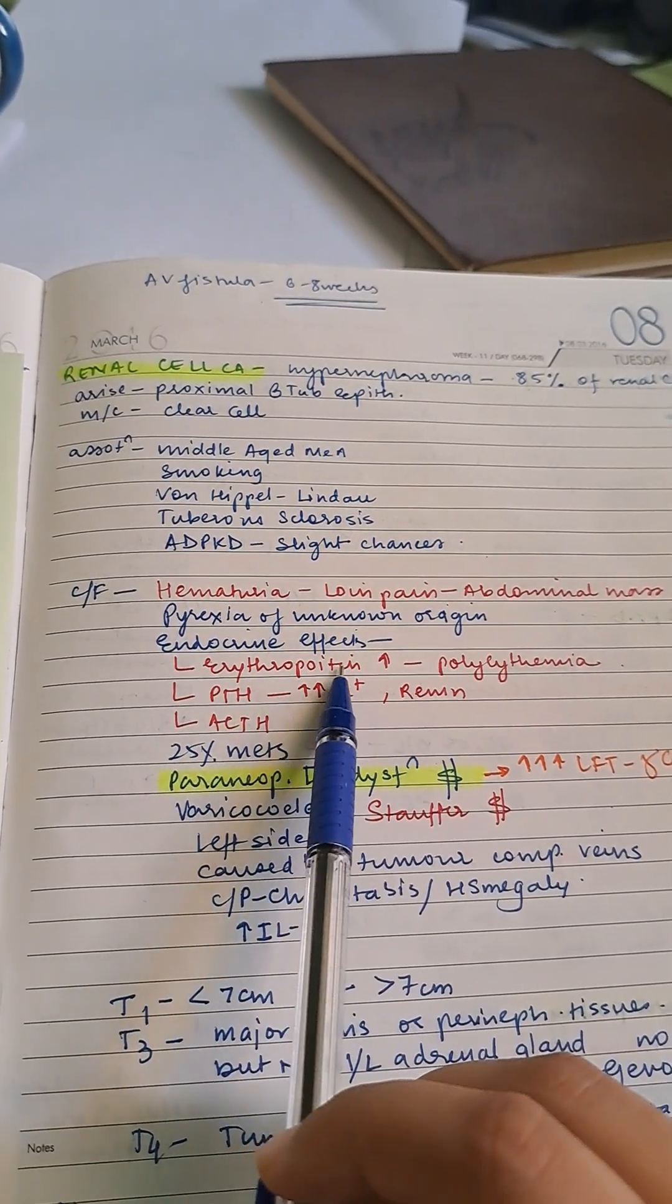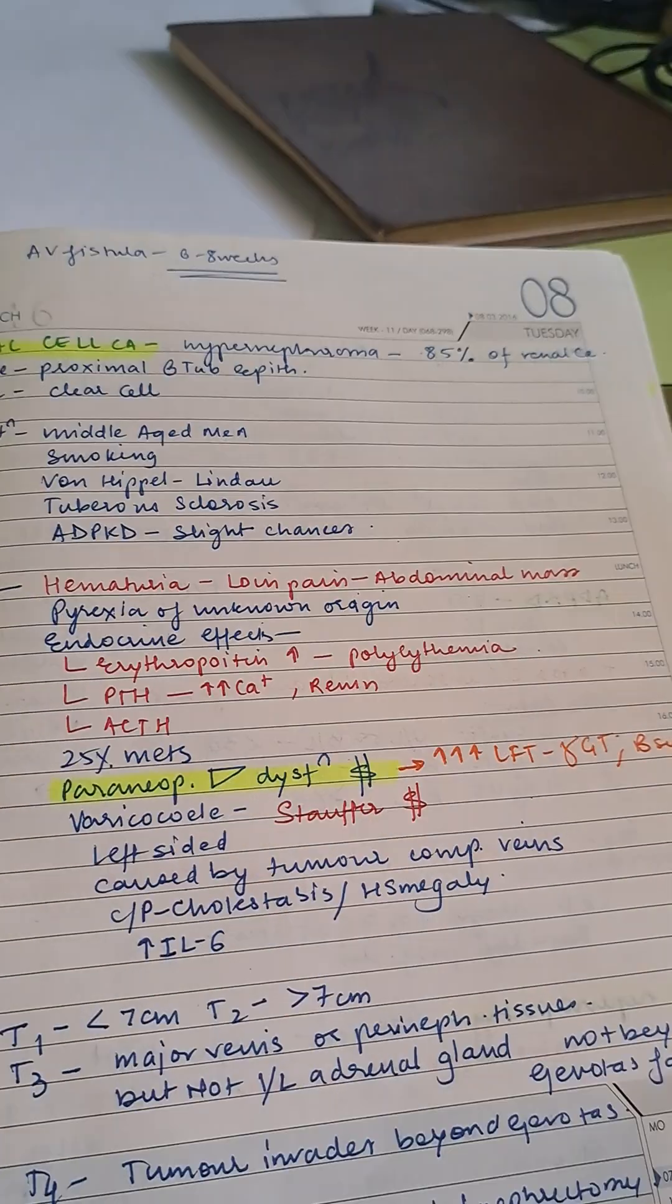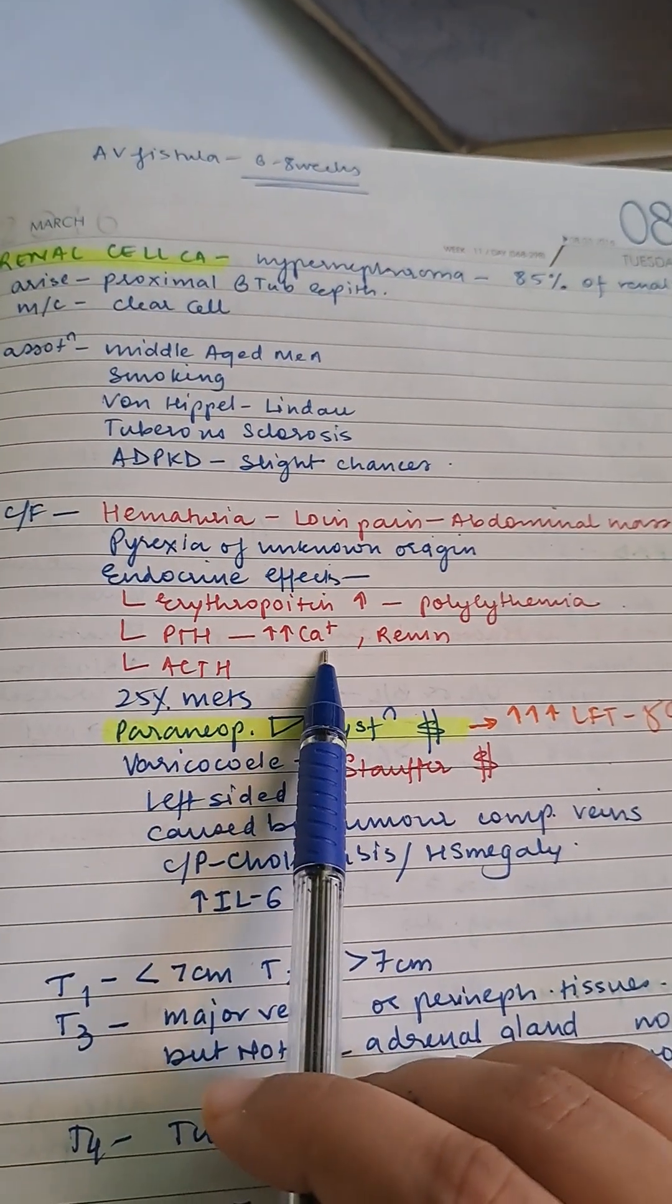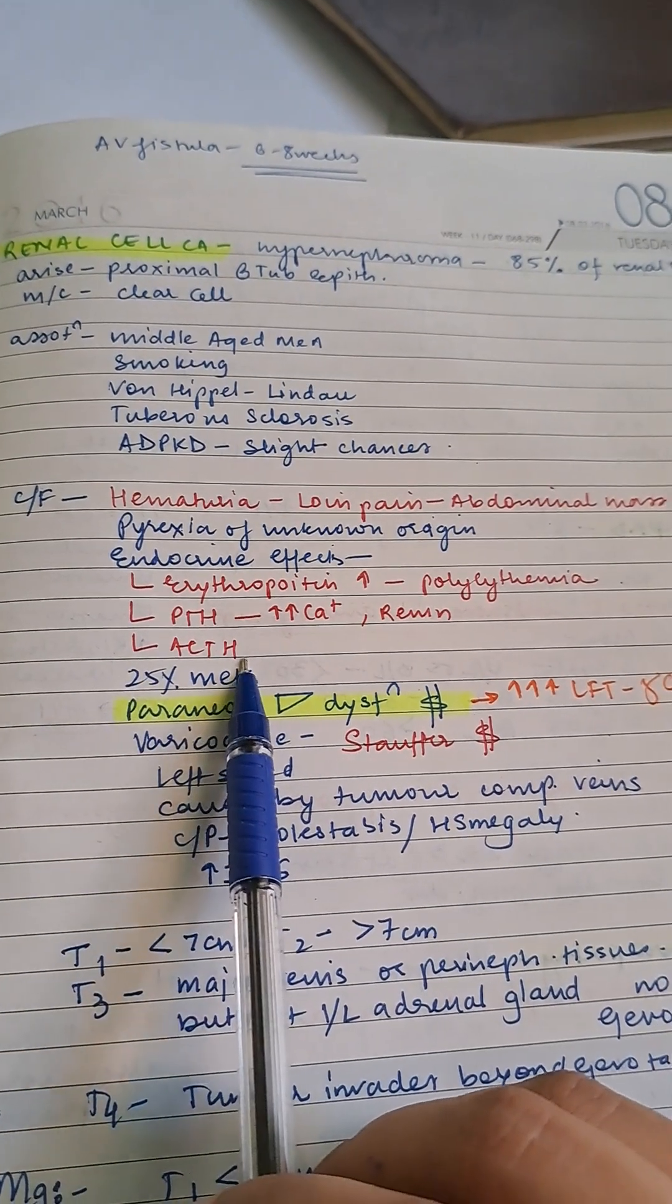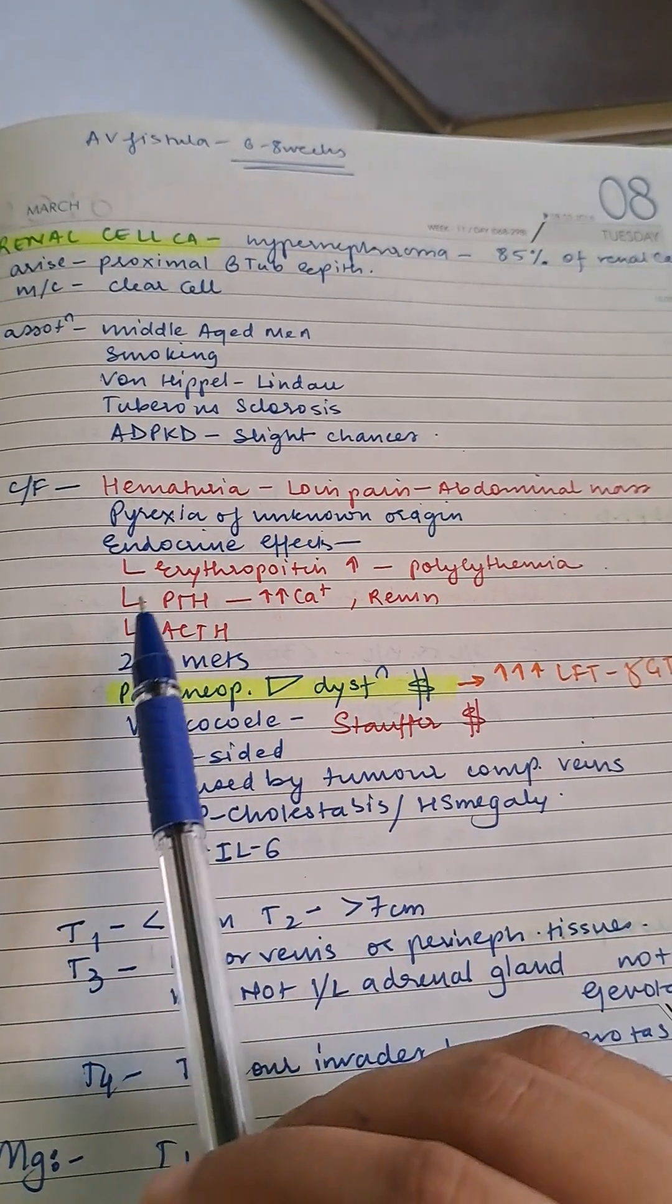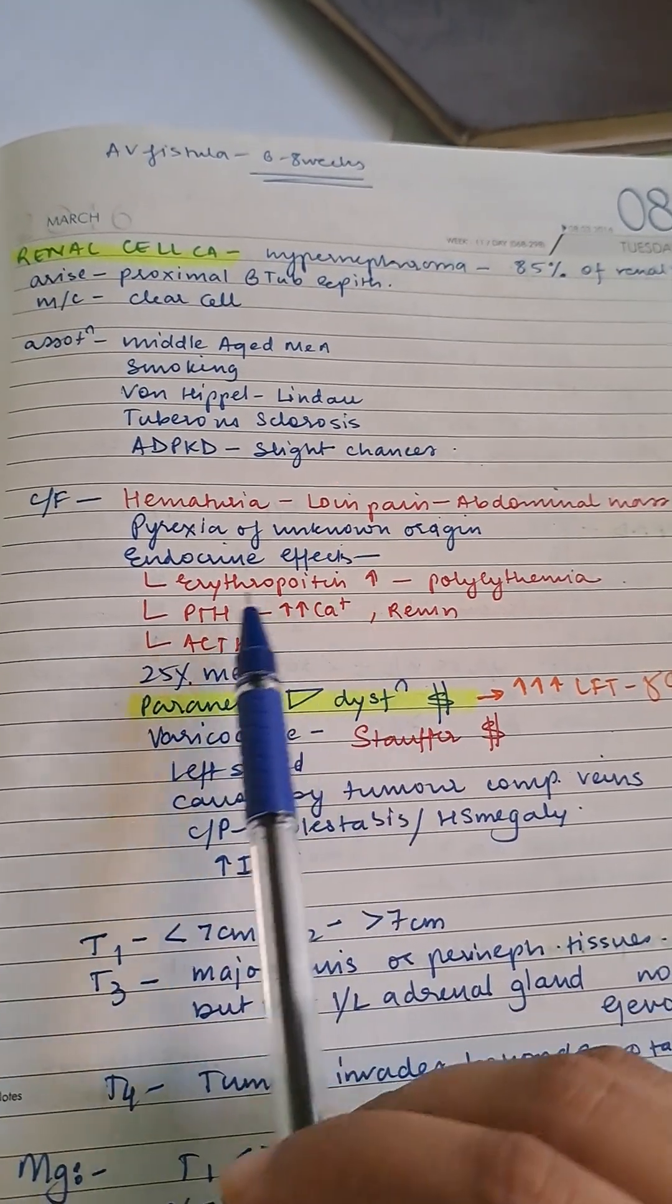Endocrine effects include increased erythropoietin causing polycythemia, PTH causing increased calcium, renin increase, and ACTH secretion. These endocrine effects are seen in any CKD patients as well—erythropoietin increase, PTH release, and ACTH.